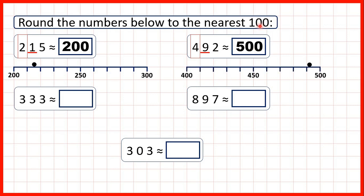If I were counting in hundreds, I would count 100, 200, 300, 400, then 500. And 492 is between those multiples of 100, but because it's closer to 500, we round up. Remember, each of these squares is an increase of 10. So this line here is 490, and 492 is just a bit more than that — but it's closer to 500 than to 400, so we're rounding up. That's why, to decide whether we're rounding up or down to the nearest hundred, we need to look at our tens digit.